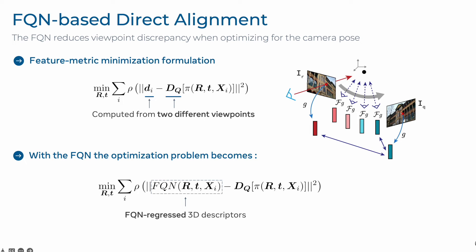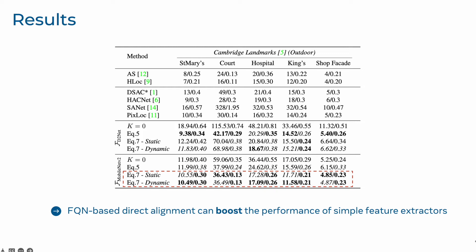In our paper, we show quantitative experiments that demonstrate the performance of FQN-based direct alignment. Notably, we find that when trained on simple MobileNetV2 descriptors, a model is able to reach performance that is on par with much more advanced image-based models such as PixLoc.